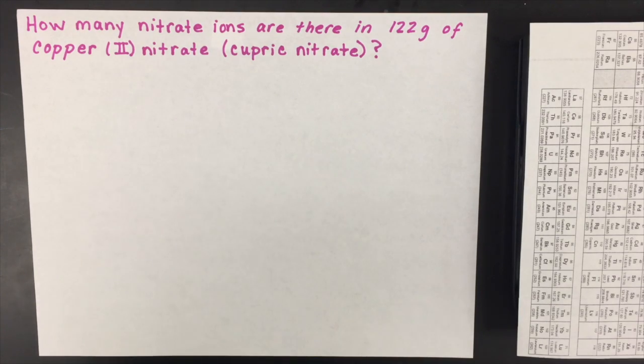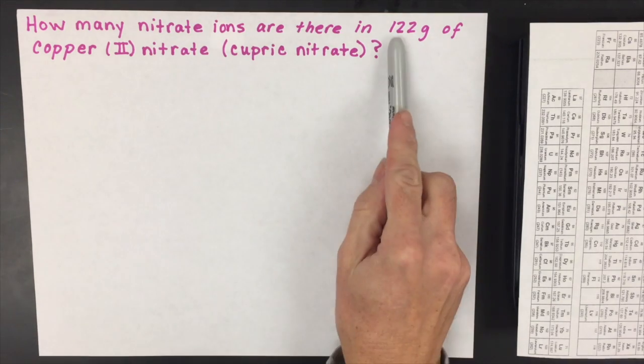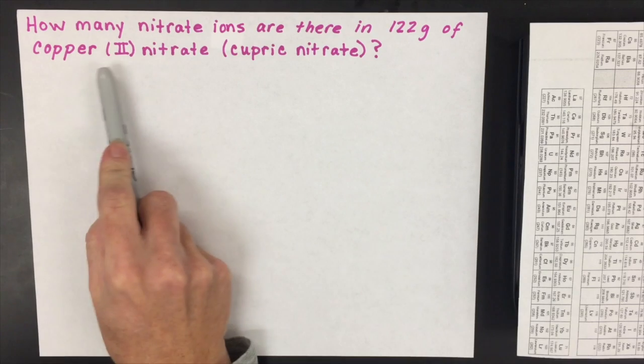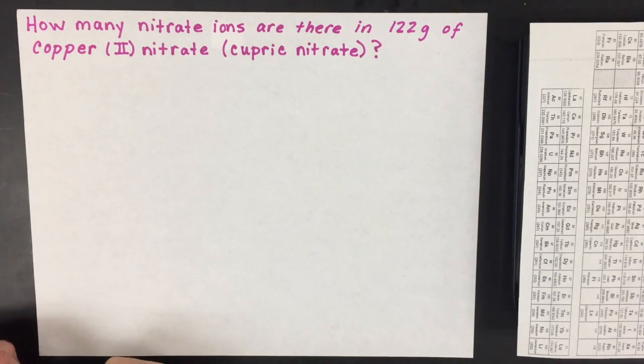In this mole conversion problem, we're going to start with 122 grams of copper (II) nitrate, also called cupric nitrate, and convert it to how many nitrate ions are in that sample.